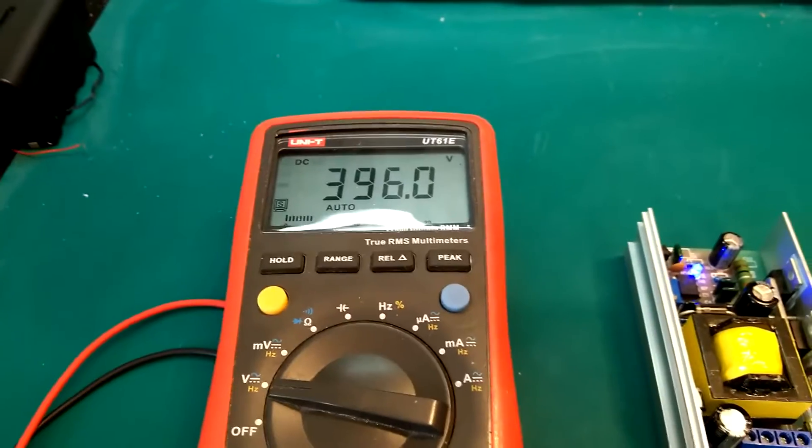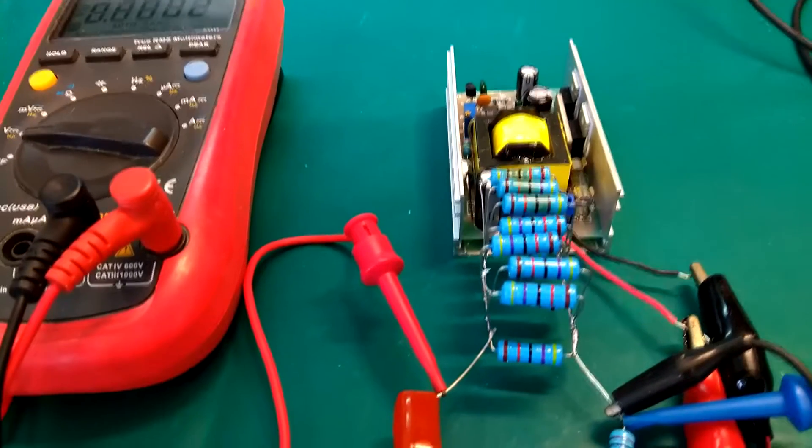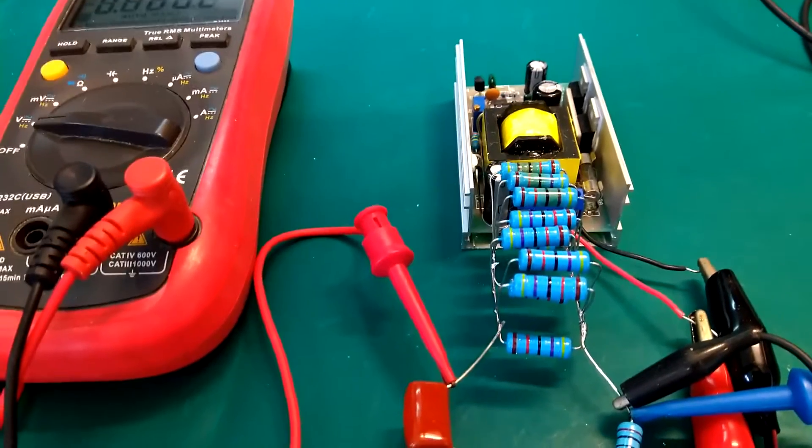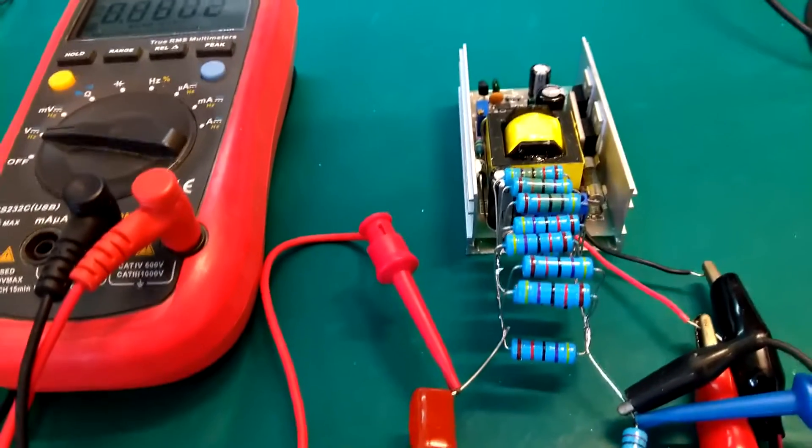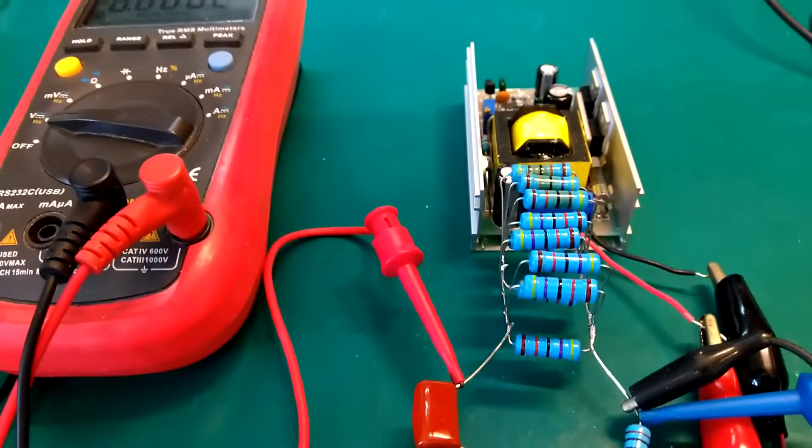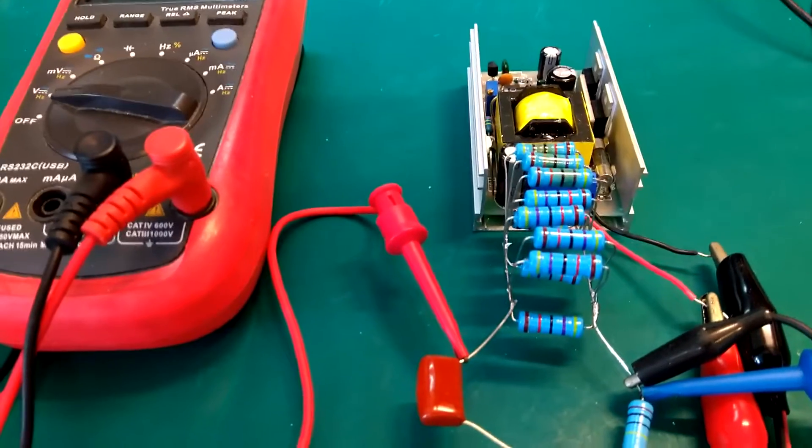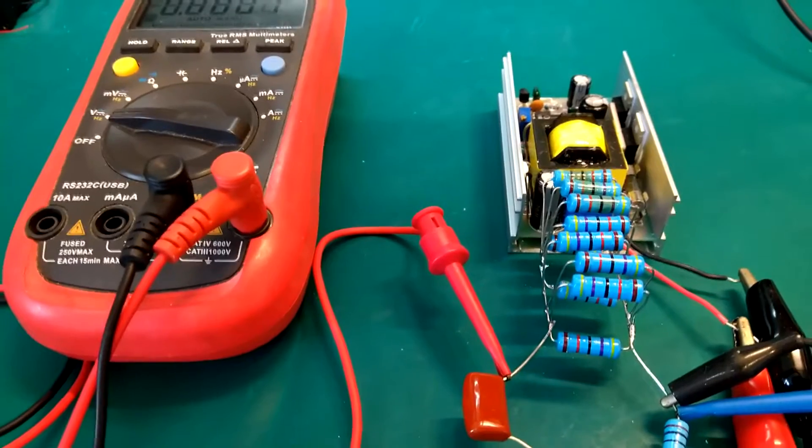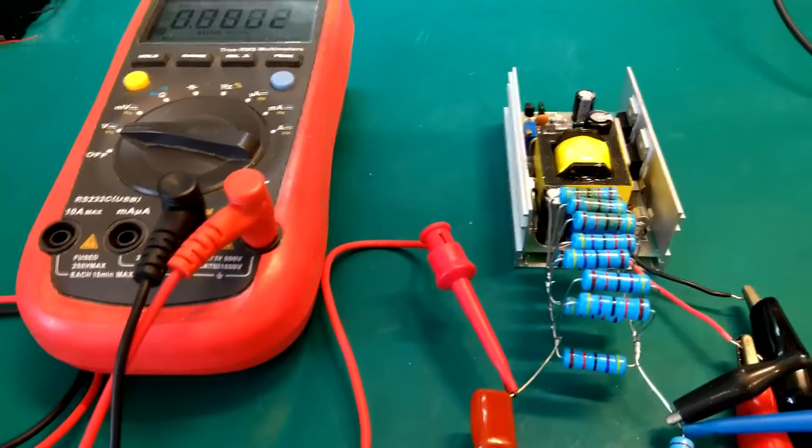Okay, I have now increased the load to 10, 47 kilo ohm resistors in parallel. So 4.7 kilo ohm at 400 volts, that should give us a current draw of around 85 milliamp. So we're getting very close to the specified 100 milliamp it should be able to deliver continuously. Let me switch it on here, let's see what happens.